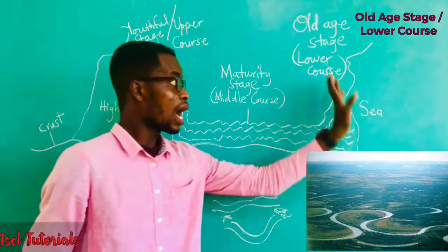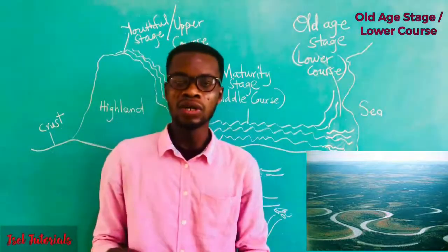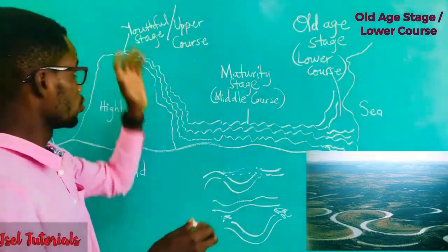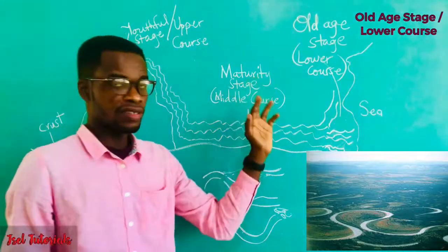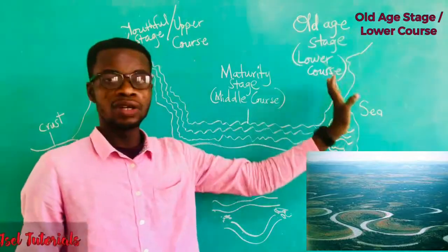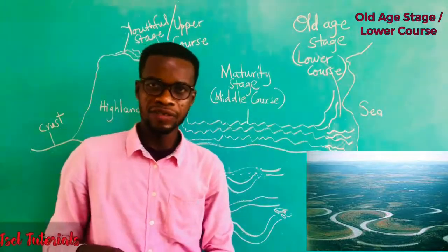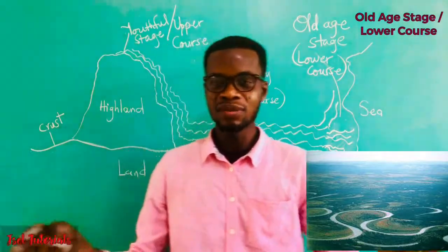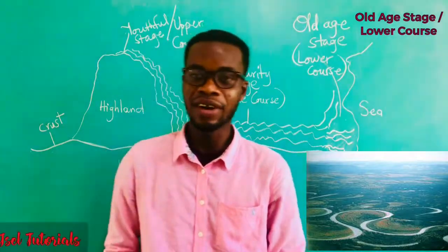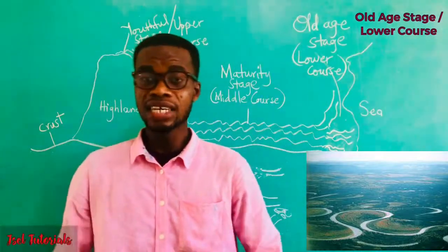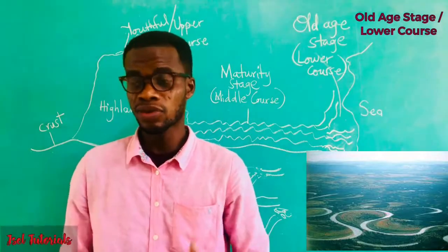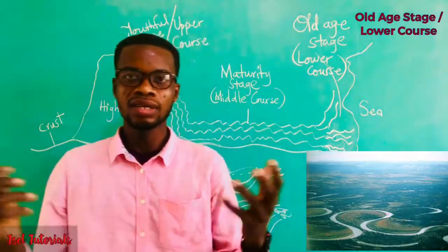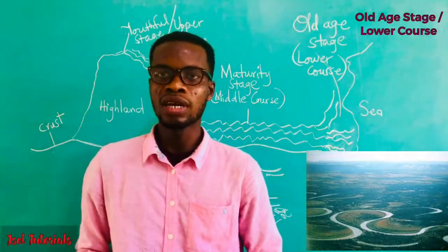Oxbow lakes can be formed out of the old age stage or the lower course of a river. These are the courses of a river: youthful stage — upper course; maturity stage — middle course; old age stage — lower course. We've looked at the features, and I think this has been made very simple and clear for you. You should be able to sketch this diagram on your own because it's very important — in an exam or test, you should be able to sketch it and explain the features clearly.